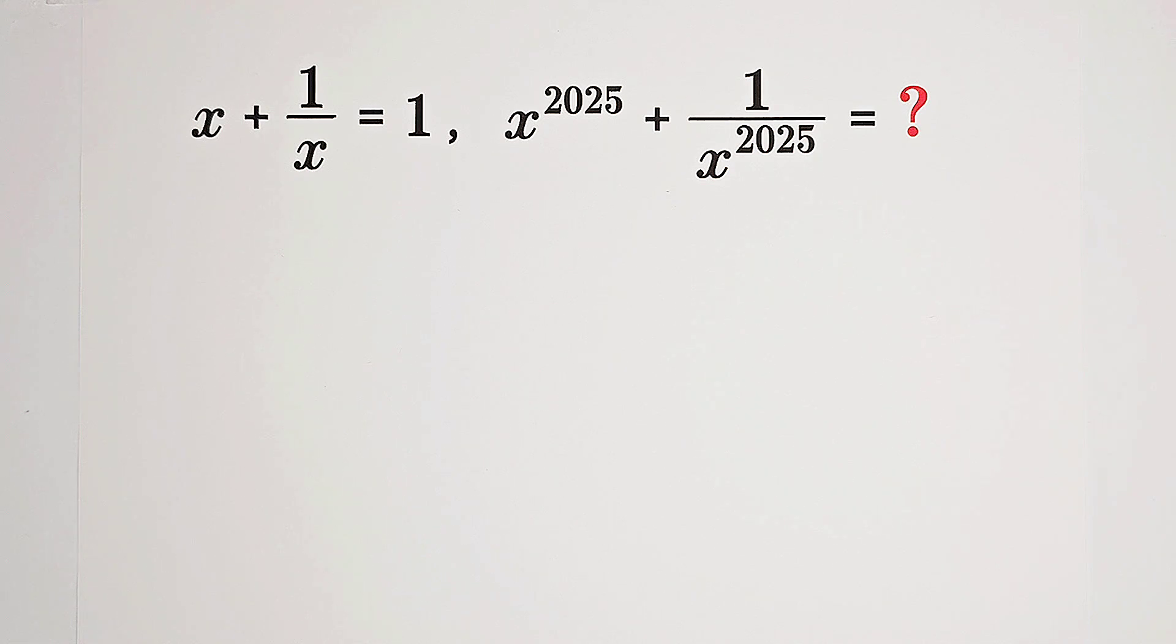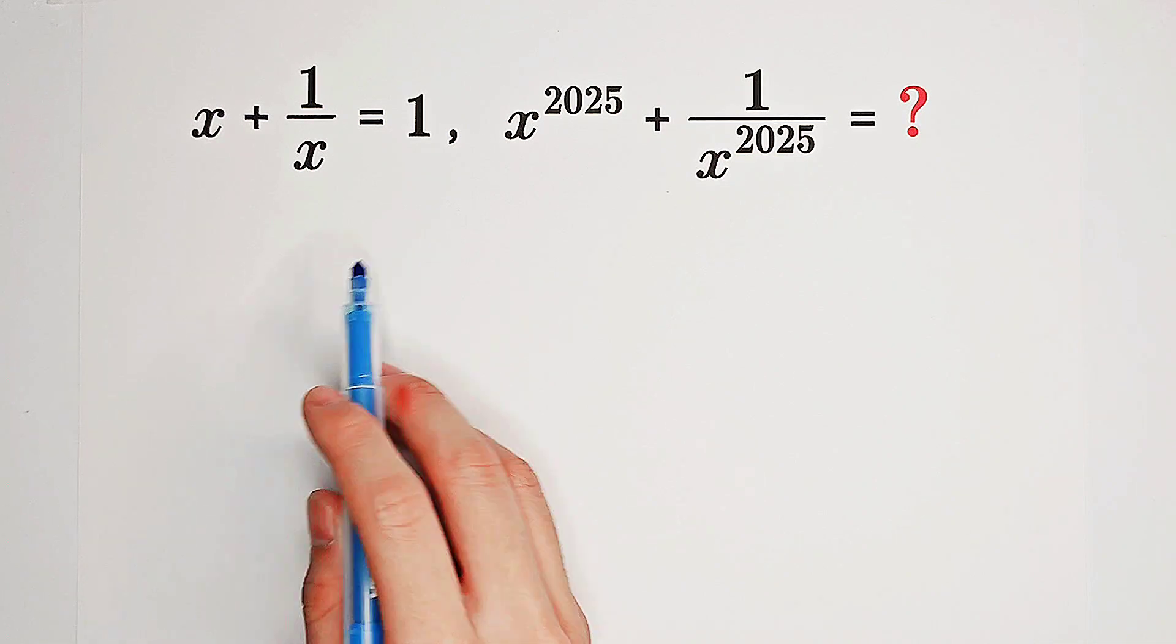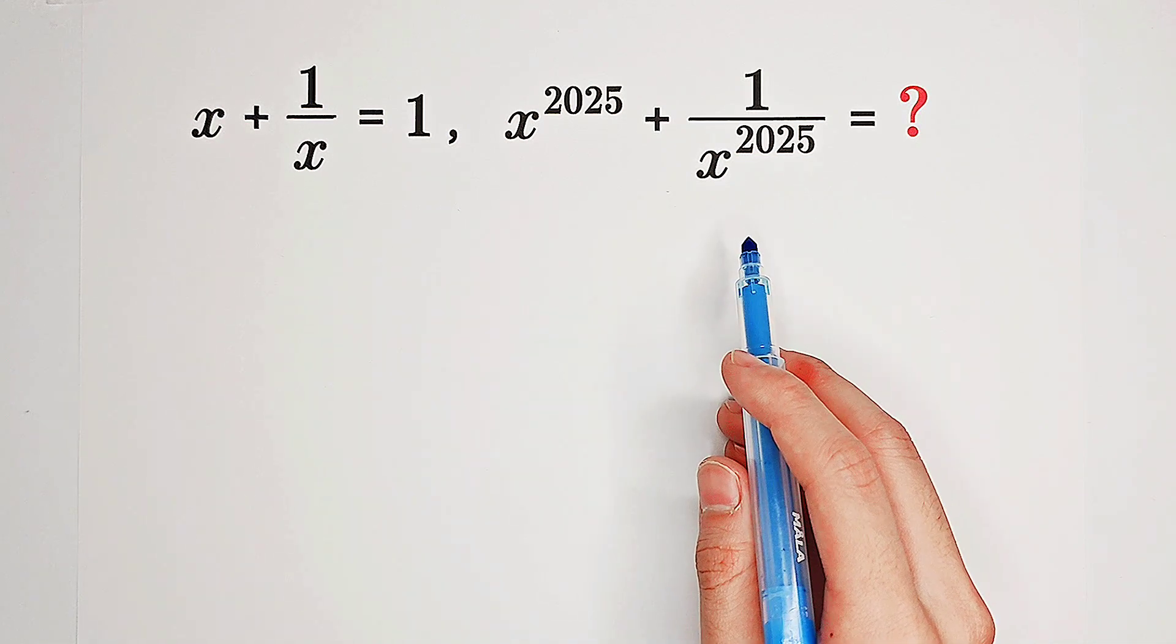The year 2025 is approaching. Knowing x plus 1 over x equals 1, solve the value of x to the power of 2025 plus 1 over x to the power of 2025.